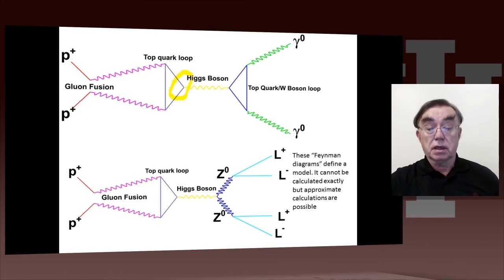These diagrams are not calculable exactly, but they're drawn because they allow physicists to know what to look for. And that's how a Higgs boson is properly studied.